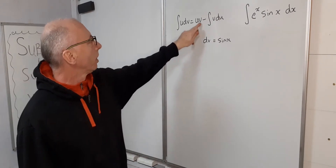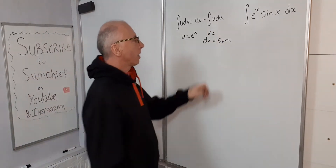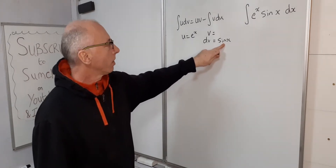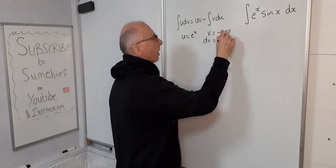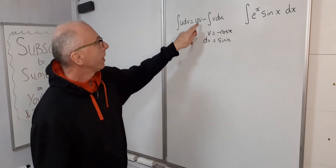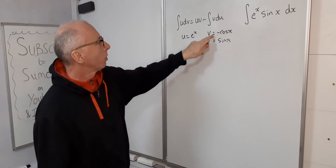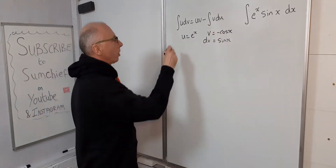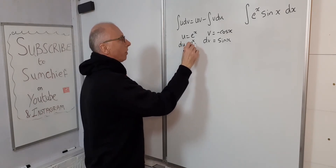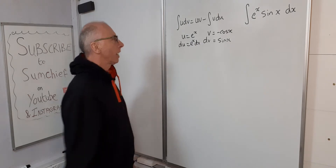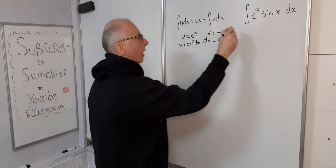So we have u, and now we need v. v is basically the integral of sine(x), and the integral of sine(x) is minus cosine(x). That takes care of v. Then for du, we take the derivative of u, which gives us e^x dx. Now let's put everything into the formula.